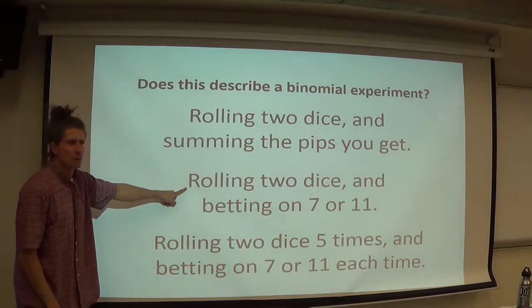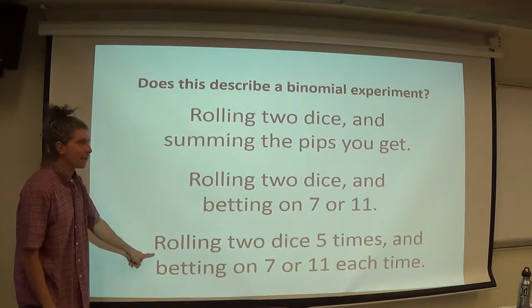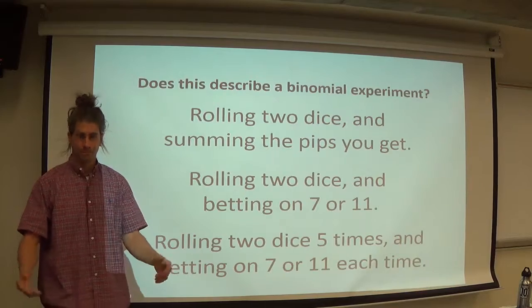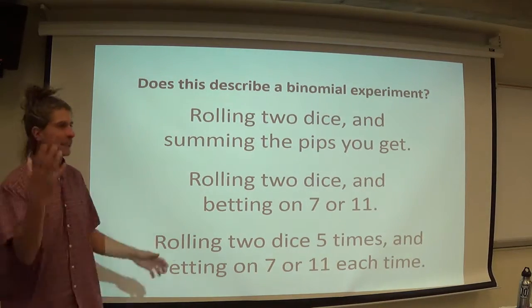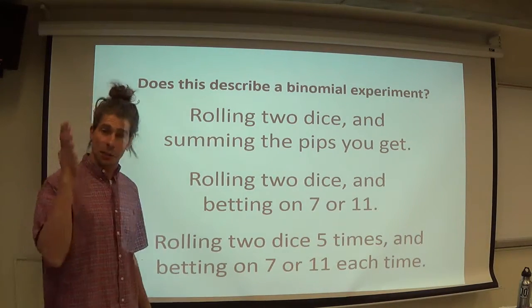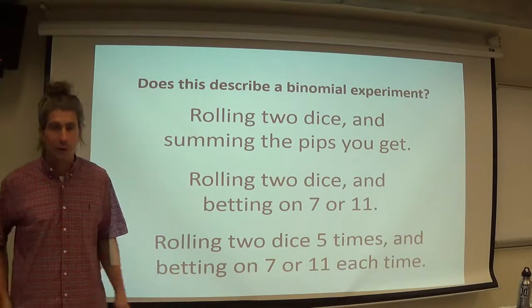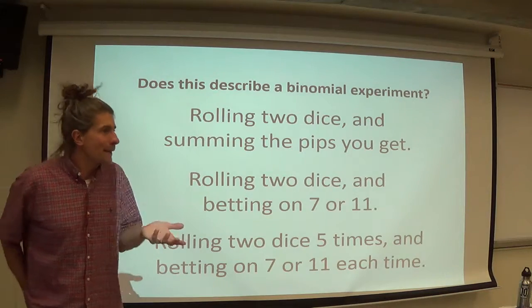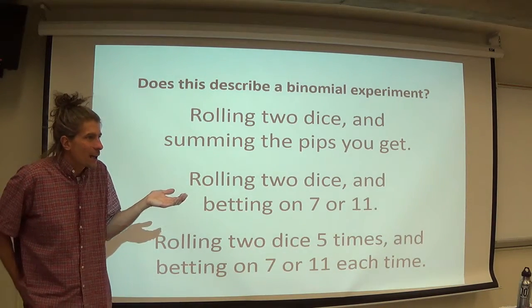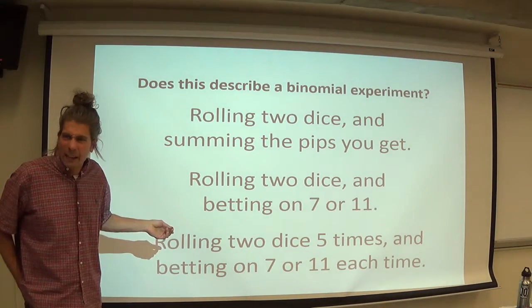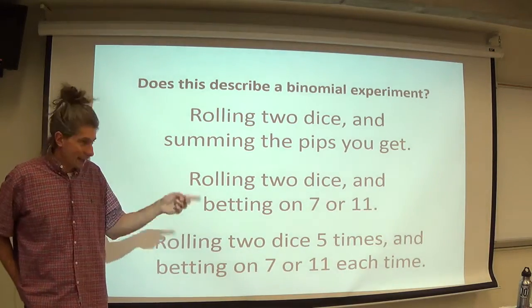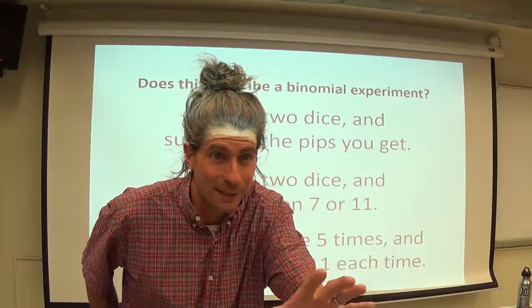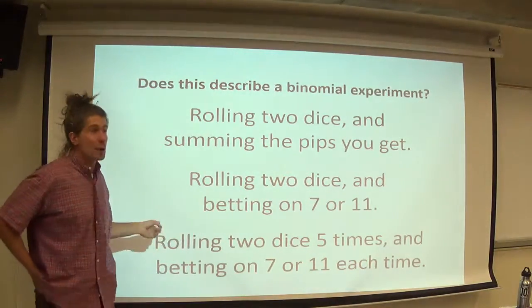So this was boring because it was only one trial, right? So let's play the game five times. And we bet on seven or 11 each time. Every time you throw the dice, you bet on seven or 11. Now, Alicia, when you said it's trinomial, you can still call it trinomial if you want to. Either you get seven, or you get 11, or you don't get seven or 11. But I can make it binomial, right?